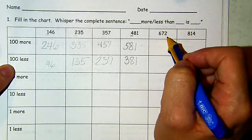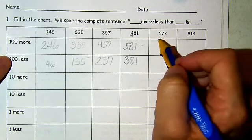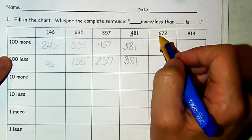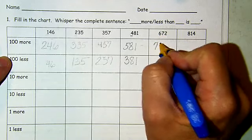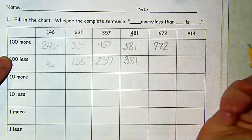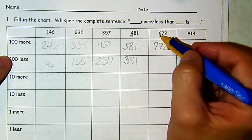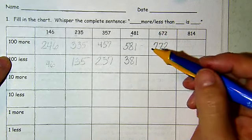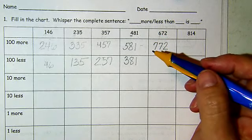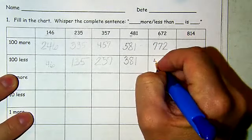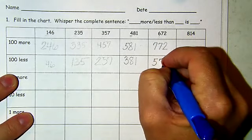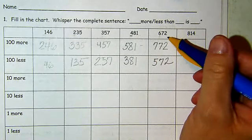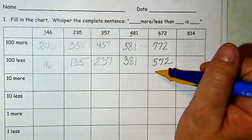672. I'm going to add one more to the hundreds place — one more hundred is 772. And take 100 away: if I have 600 and I take 100, I have 500. So 100 less than 672 is 572.